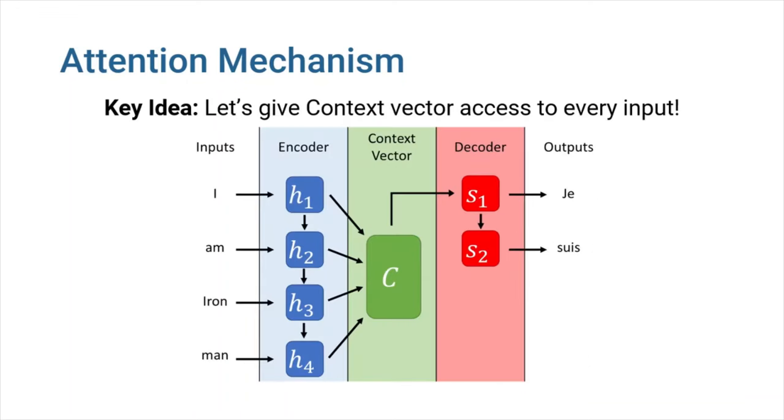The main idea of attention, which Bahdanau also used in his paper, is that we give context vector access to the entire input sequence instead of just the last hidden state. In this way, even if the length of the sentence increases, the context vector can still contain the contents of the sentence. Now, we just need to assign an attention weight on each of those inputs so that the decoder can focus on the relevant positions in the input sequence.